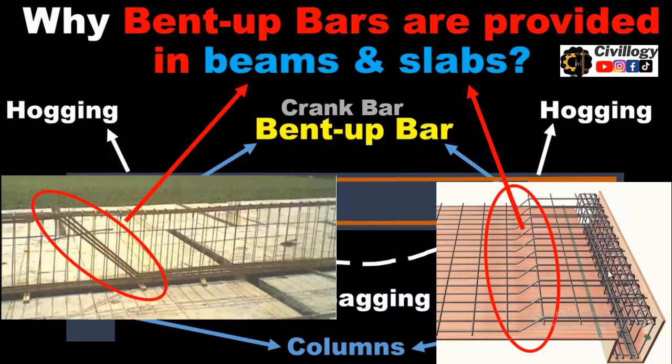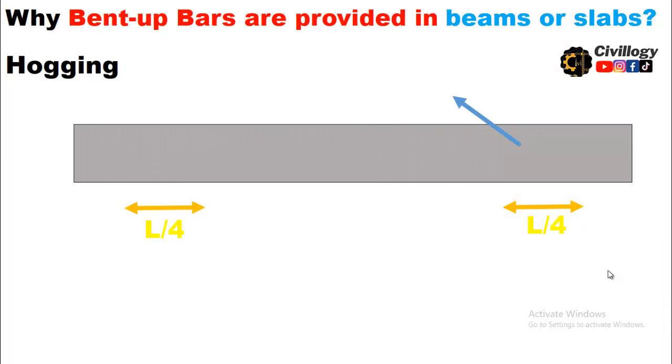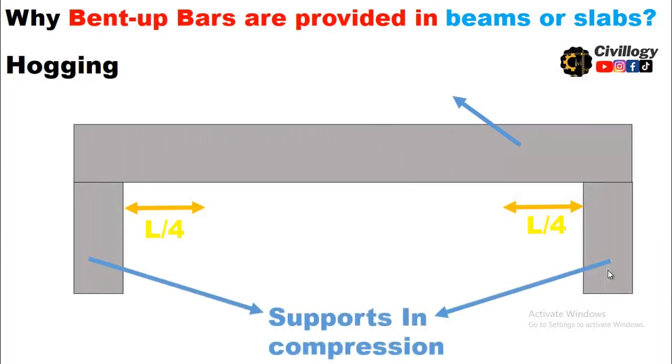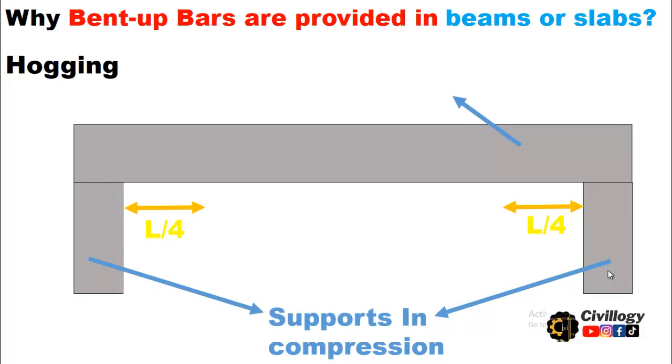We will discuss the behavior of these members under loading and the changes they undergo by explaining hogging and sagging taking place in the beam, so that you can easily understand the purpose of bent up bars. Let's assume a beam supported on columns. The bottom portion of the beam experiences tension, and to cater the positive moment, bottom reinforcement is provided.